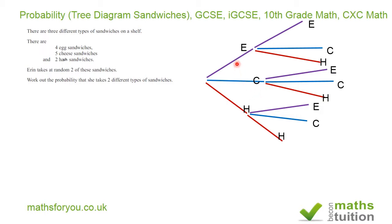The first thing to note is that there are two events. The first event is picking the first sandwich, and the second event is picking the other sandwich. So we have two events: the first pick and the second pick.